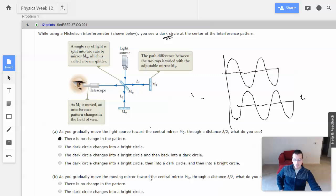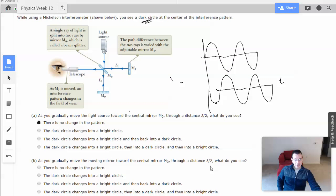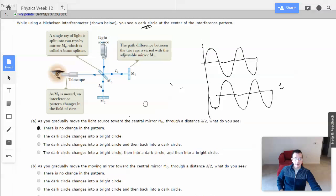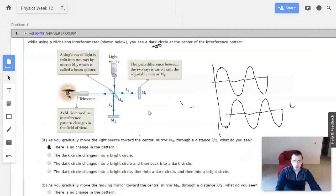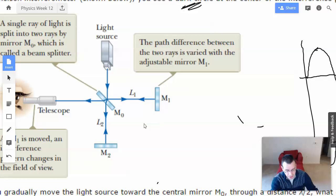As you gradually move the moving mirror toward the central mirror through a distance wavelength over 2, what do you see? So when you're moving the moving mirror, you're shortening the distance it has to travel. So you're shortening the distance the wave travels.